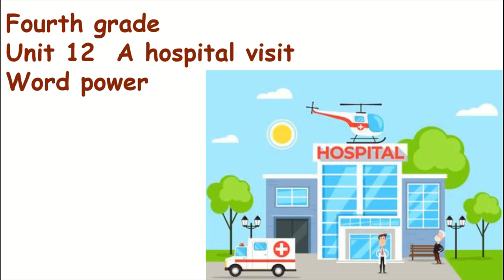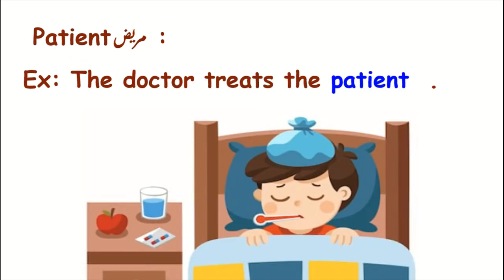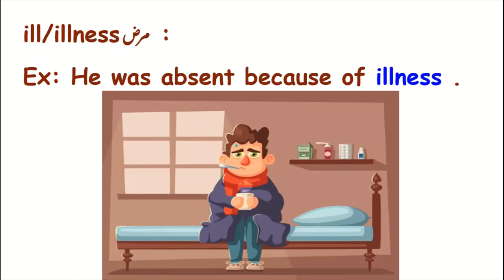Now let's start with the vocabulary. The first word is 'patient.' Patient means 'marid' in Arabic. For example: 'The doctor treats the patient.' The second word is 'illness.' Illness means 'marad' in Arabic. For example: 'He was absent because of illness.'